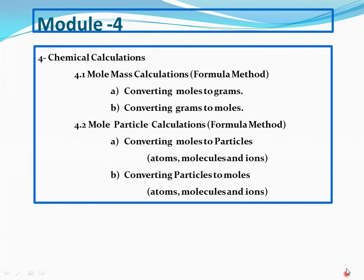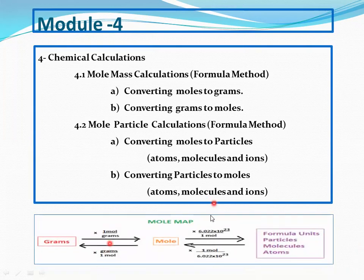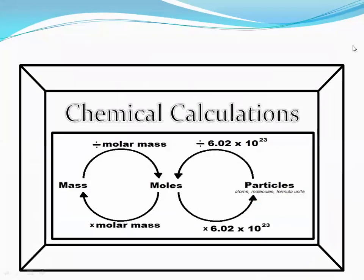Particles may be atoms, molecules, ions, and formula units. Moles can be converted into grams and grams can be converted into moles. Moles can also be converted to number of atoms, molecules, or ions, and number of atoms, molecules, or ions can be converted into moles. So we can say chemical calculation is a basic calculation for converting moles from particles or from mass. Mass can be converted into number of moles then number of particles. Atoms, molecules, or ions can be converted into number of moles and then mass in grams.